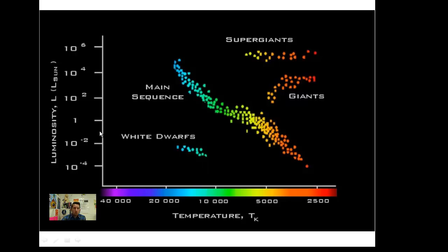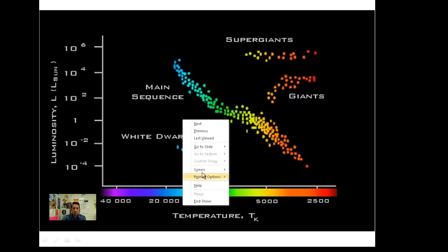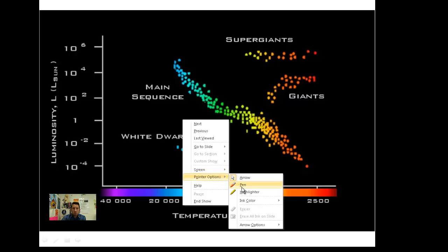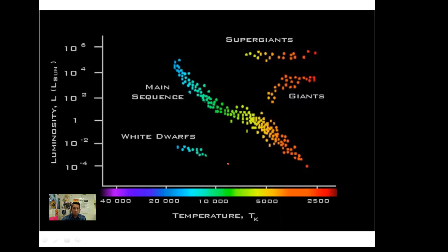Here it is. You'll notice along the y-axis, here's luminosity, and it is increasing as we go upward. Luminosity is increasing as we go up, and temperature is on the x-axis. Let me get my pointer out here. So we have luminosity increasing as we go up.